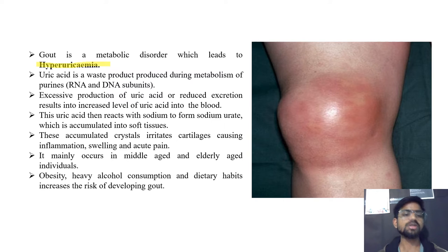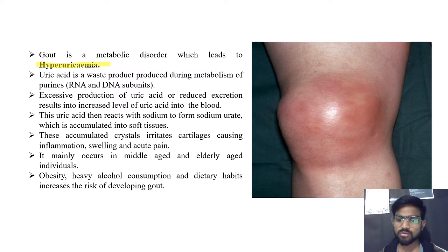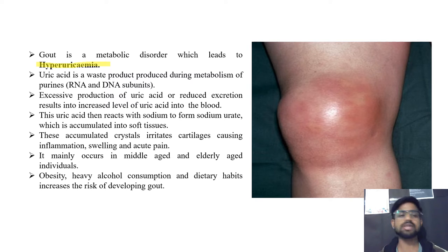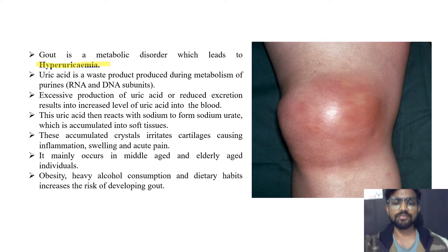This accumulation of uric acid causes gout. Uric acid is a waste product produced in the metabolism of purines, which are RNA and DNA subunits. Excessive production of uric acid or reduced excretion results in increased uric acid levels in the blood. There are only two conditions that cause this: either production is too high, or excretion is decreased.